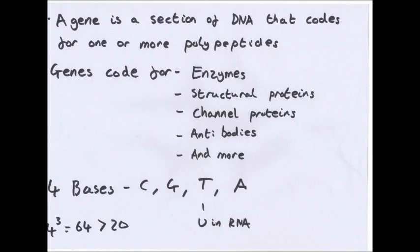Genes code for a lot of things like structural proteins, hemoglobin, antibodies, cell surface receptors, antigens, actin and myosin in muscle cells, tubulin, channel proteins, electron carriers and enzymes. So they're very important.